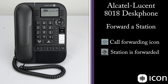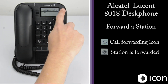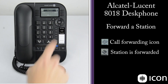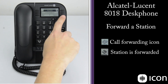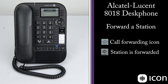The phone shows it's in forwarding mode because the icon in the corner has changed and is animated, and we also get a notification scrolling across the top. To take the phone out of forwarding, select the forwarding key, scroll down to cancel, and select cancel. The screen shows text confirmation and the forwarding icon returns to its inactive state.